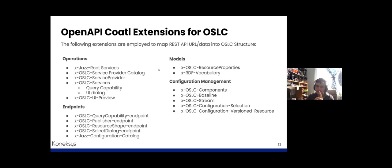Regarding vendor extensions, Coattle includes extensions to generate the OSLC API structure, divided into four sections: resource models — in case the user needs to include an extra RDF vocabulary and its properties; resource operations — where the user specifies the REST API data to be exposed as OSLC results; API endpoints — to specify which endpoints will expose the OSLC resource; and resource management operations — to specify which endpoints will expose OSLC configuration management resources.